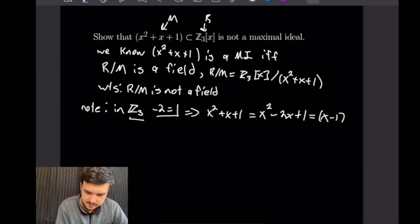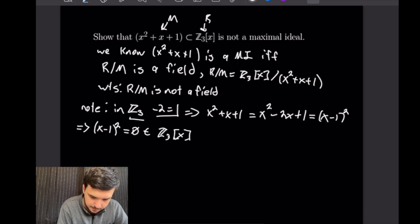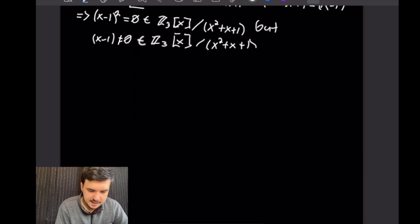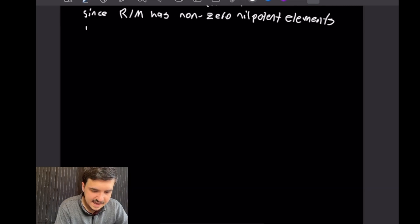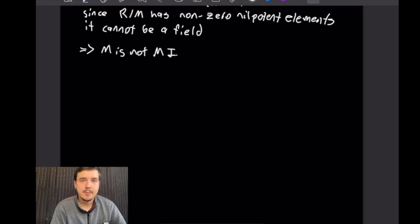This means we can factor the polynomial in Z3[x] as (x − 1)². This is a problem because (x − 1)² = 0 in Z3[x] / ⟨x² + x + 1⟩, yet x − 1 ≠ 0 in that quotient ring. Since the quotient ring has nonzero nilpotent elements, it cannot be a field by a previous result. Therefore M = ⟨x² + x + 1⟩ is not a maximal ideal.